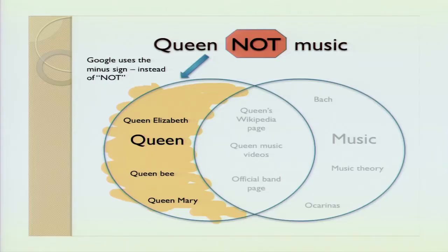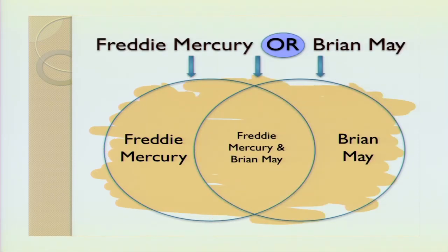The next Boolean operator is OR. Let's say that you're interested in individual band members. So you can search for Freddie Mercury OR Brian May. This will return pages that mention one, the other, or both — it's sort of like doing two searches at once. In Google, you can use the vertical line symbol that's just above the Enter key on your keyboard, or you can actually type out OR. The catch is it has to be in all caps.